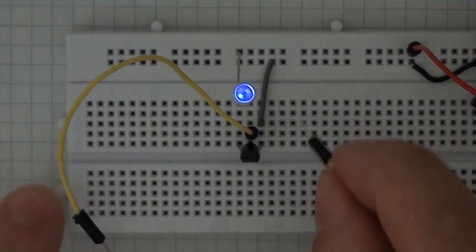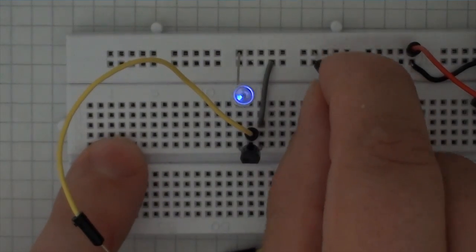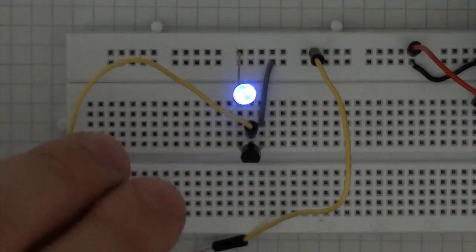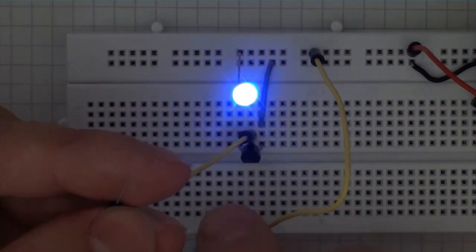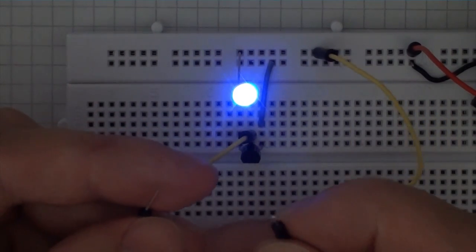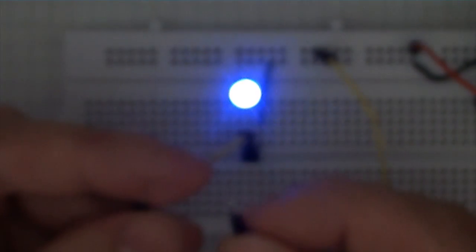And finally, if I was to connect another yellow line into the 9V rail and I was to take this wire and touch it off my finger, so it's just touching my finger, and then take the other wire and touch it off my finger, you can see that the LED lights up very brightly.